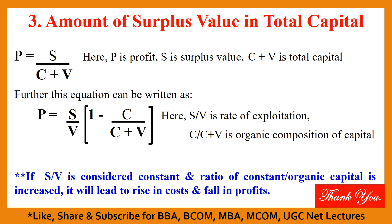If s upon v is considered constant and the ratio of constant capital is increased, then the cost will increase and the rate of profit will fall. I hope these three ratios are now clear to you. This was all for today's lecture session. Thank you.